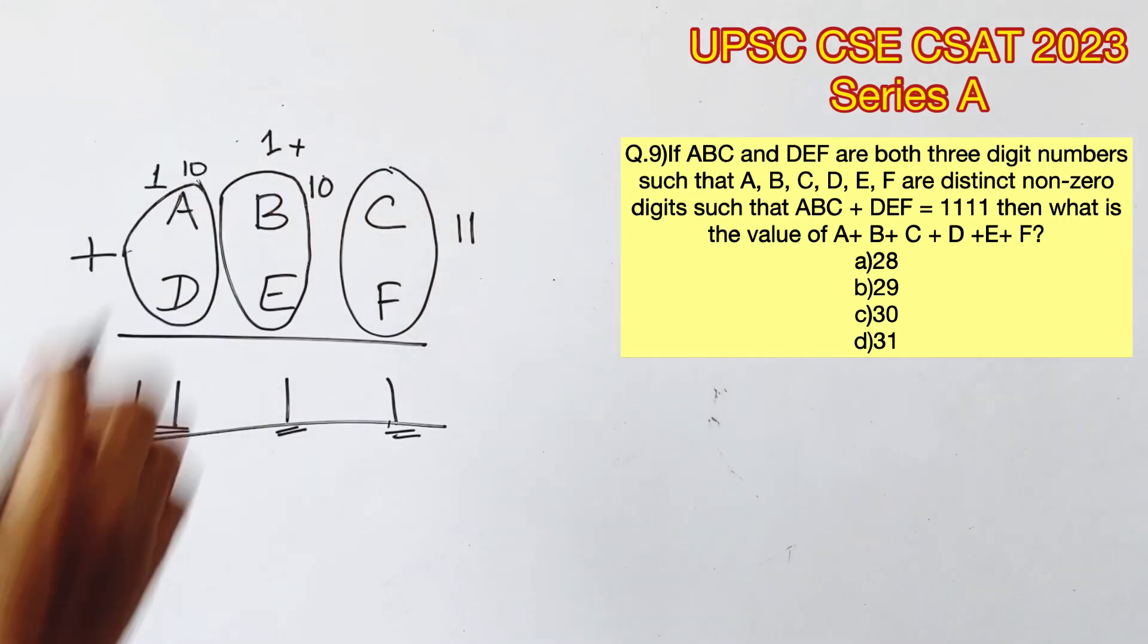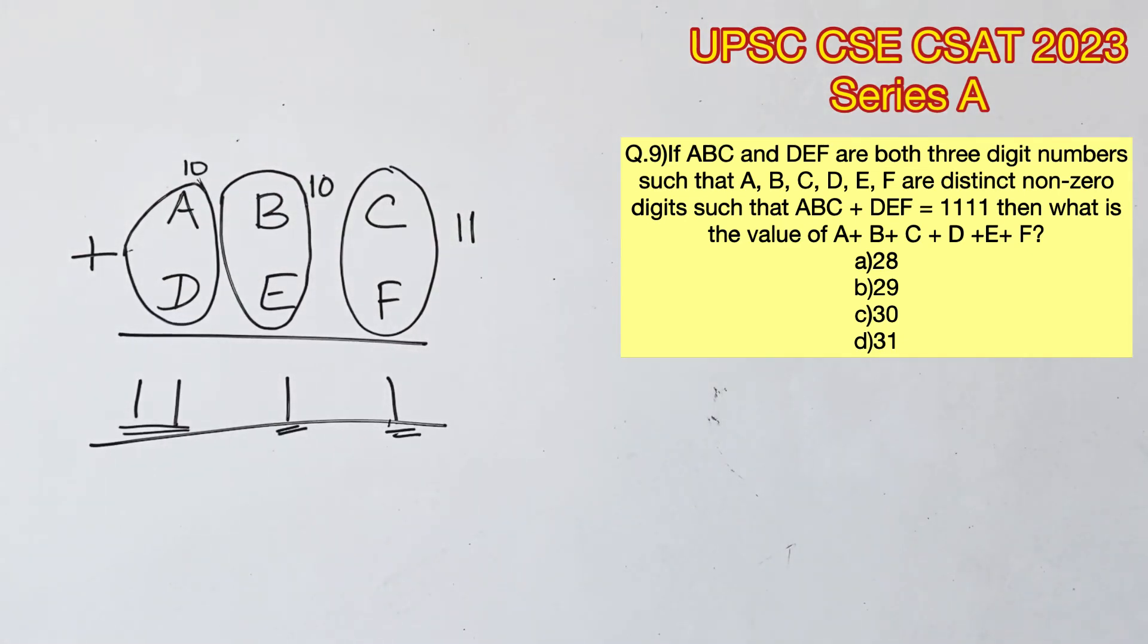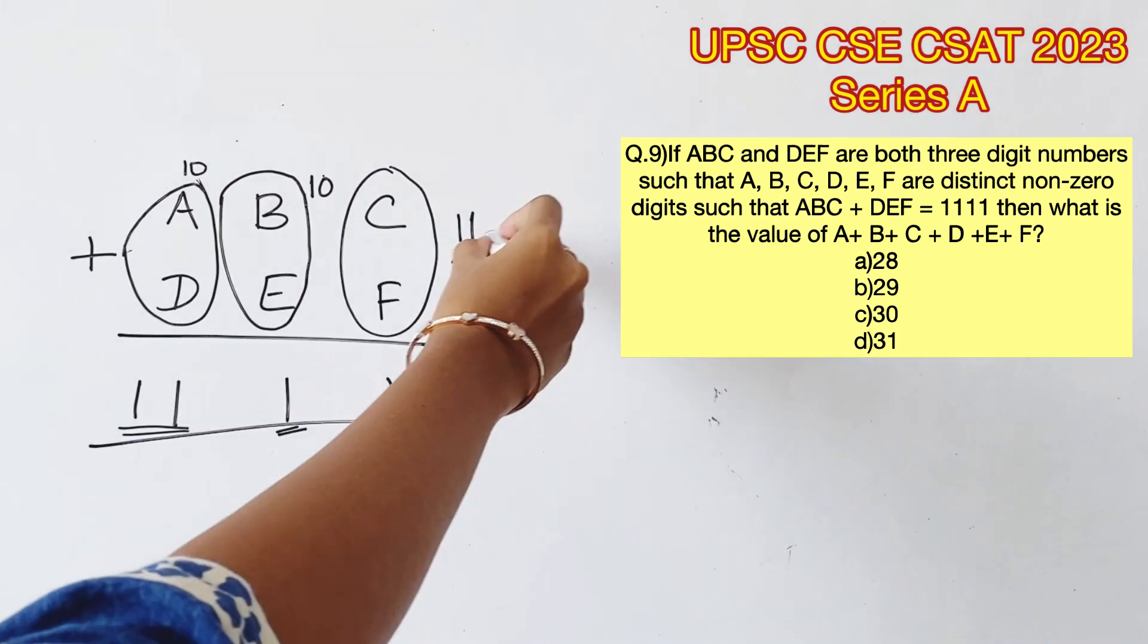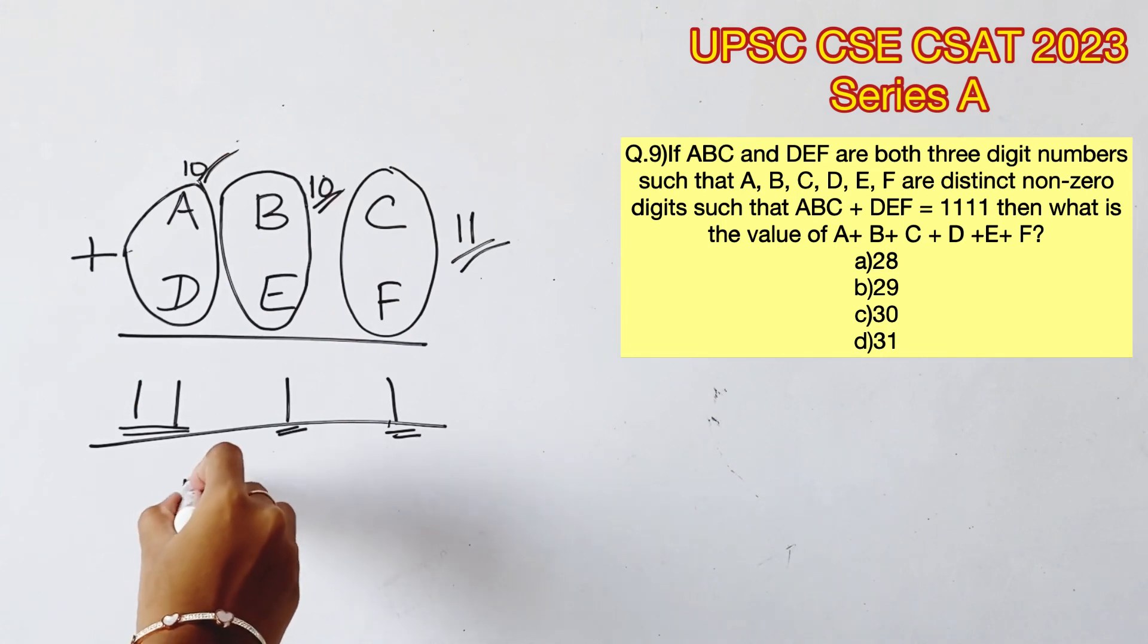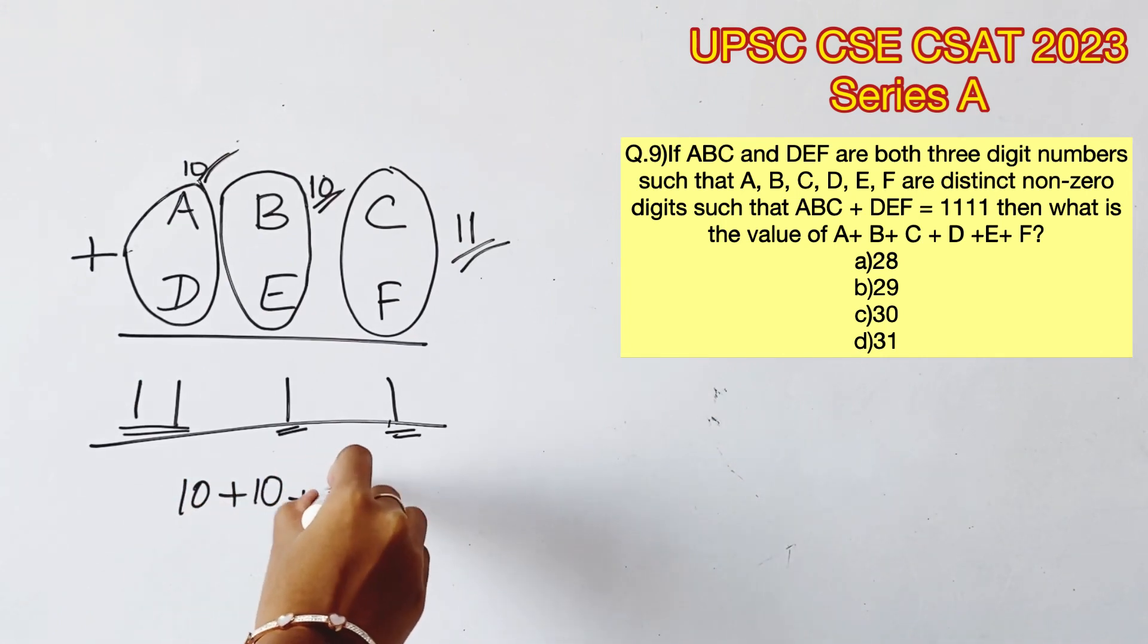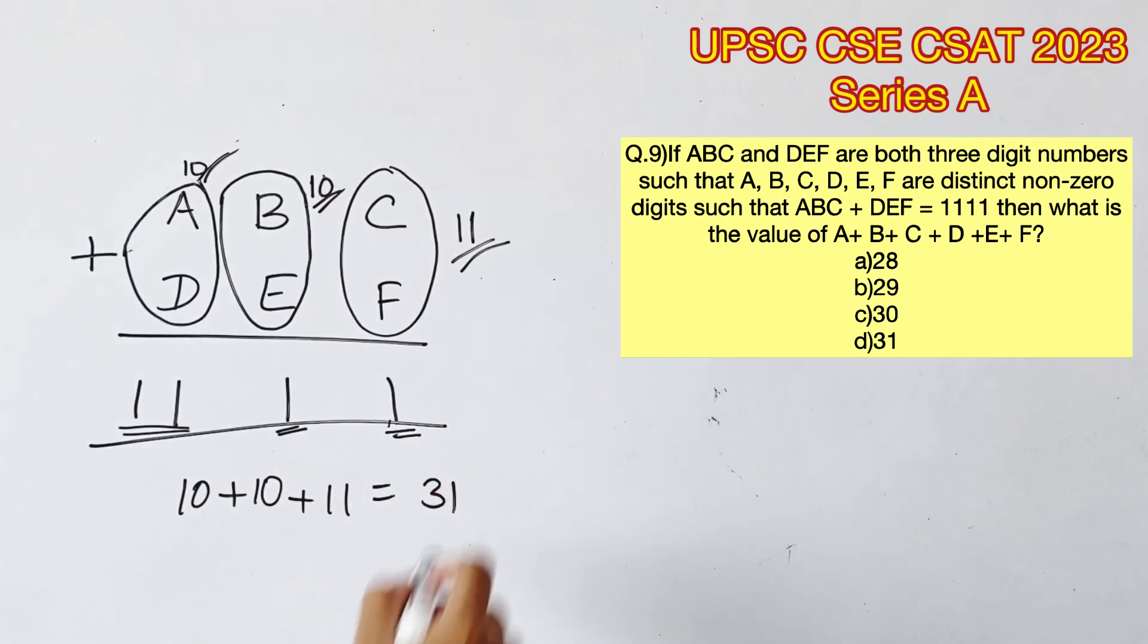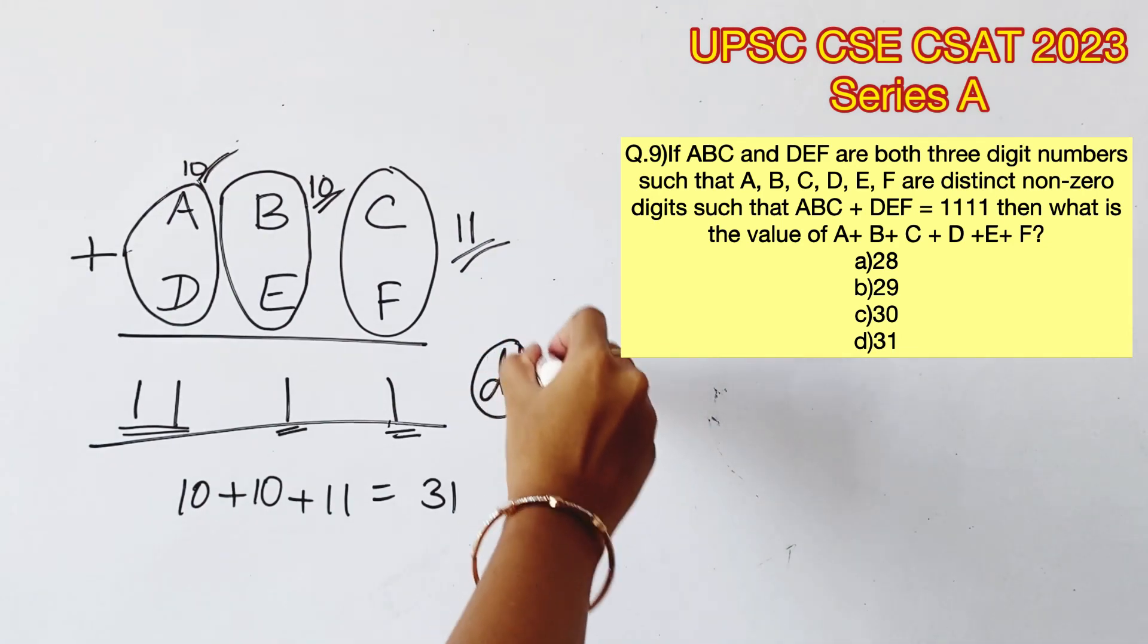With this we can find out the sum of all the digits because we have the sum of C and F, B and E, and A and D. So the sum of all the digits would be 10 plus 10 plus 11, that is equal to 31. Therefore option D is the right answer.